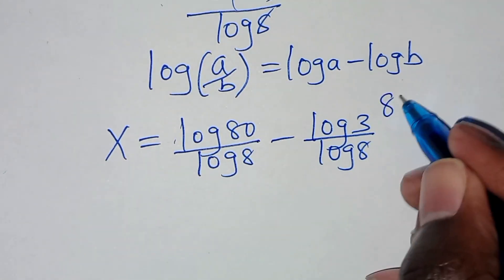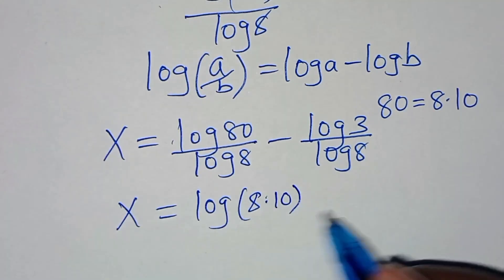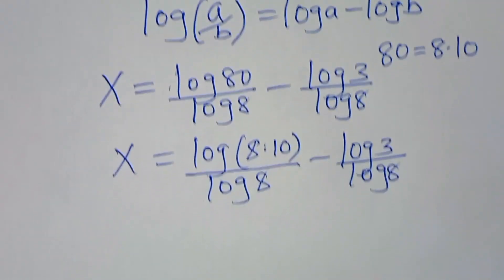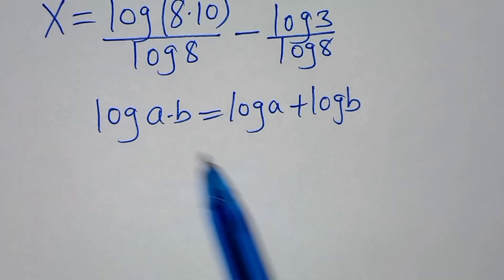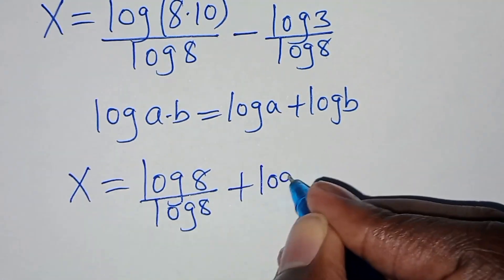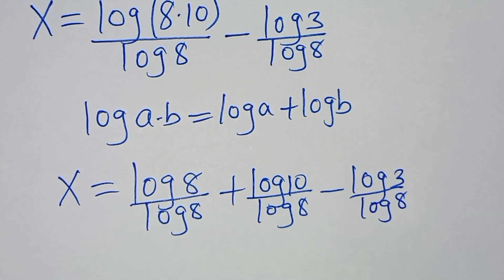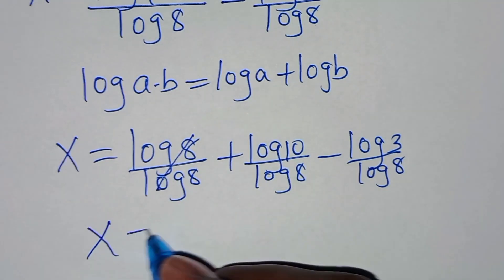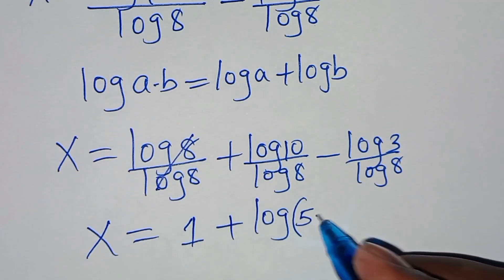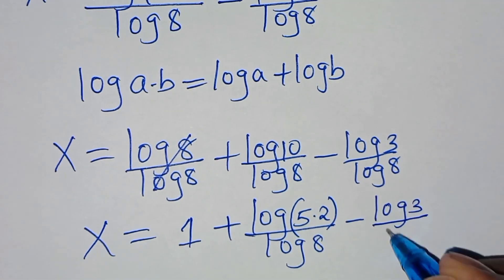The next step: we can express 80 as 8 times 10, so that x will be equal to log(8 times 10) divided by log 8, subtract log 3 divided by log 8. Since log(8 times 10) is in the form log(A times B), we can expand it, giving x equal to log 8 divided by log 8, plus log 10 divided by log 8, subtract log 3 divided by log 8. Simplifying, log 8 over log 8 is 1, so x equals 1 plus log 10 divided by log 8, subtract log 3 divided by log 8.